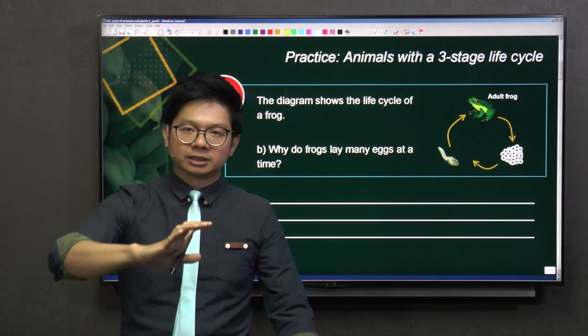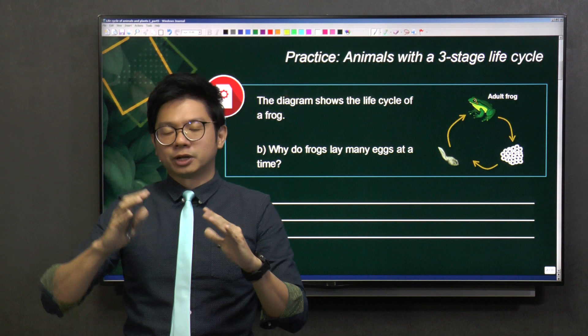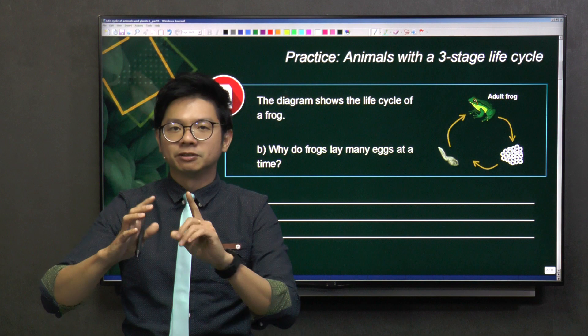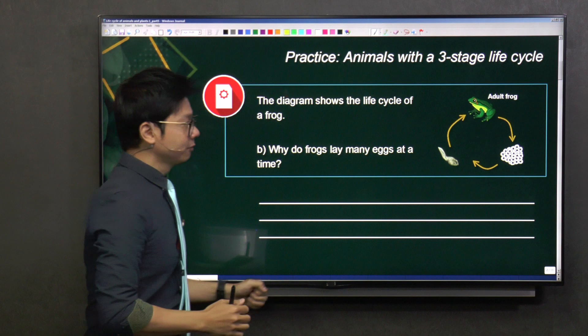So the chance of our offspring to grow up into an adult to reproduce is very high. For human beings, being at the top of the food chain, we do not need to give birth to many offspring. We just need to give birth to one because it has a very high chance of survival.